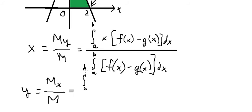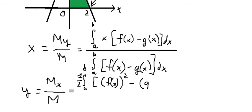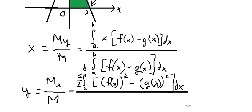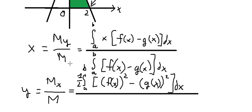For y-bar, we have the integral from a to b of one-half times [f(x) squared minus g(x) squared] dx, divided by the same denominator integral from a to b of [f(x) minus g(x)] dx.